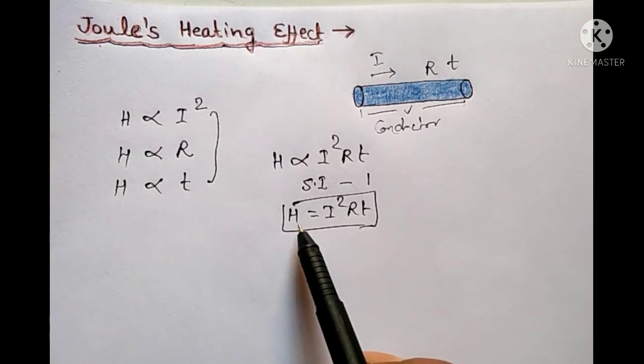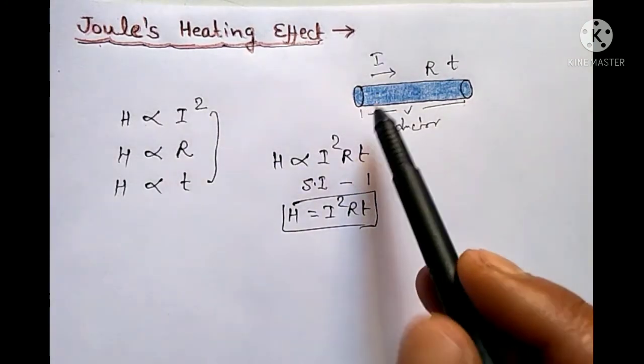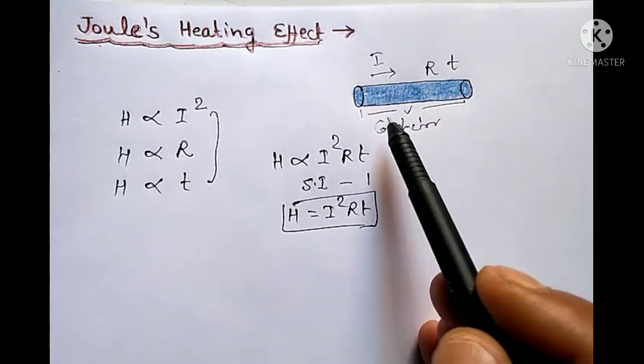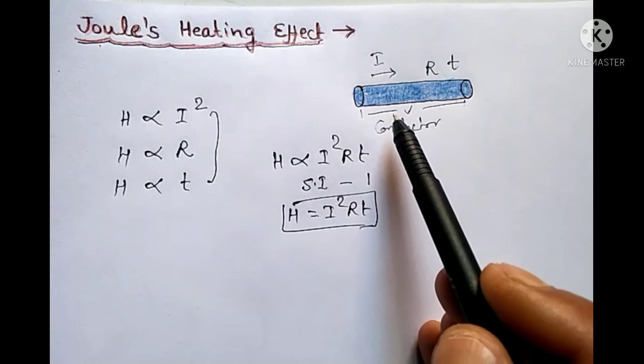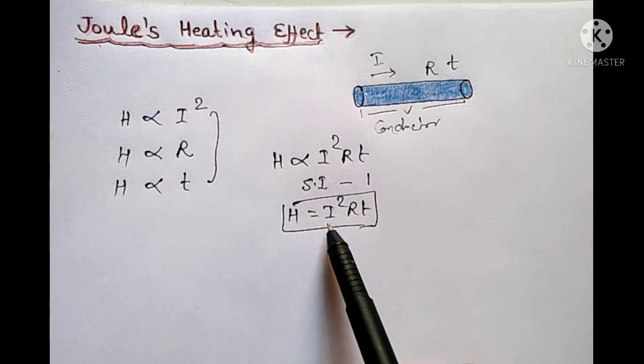So in this way, we calculate heat produced in the conductor. If we know the current, resistance, and time for which the current flows through a conductor, we are able to find the heat produced in the conductor.